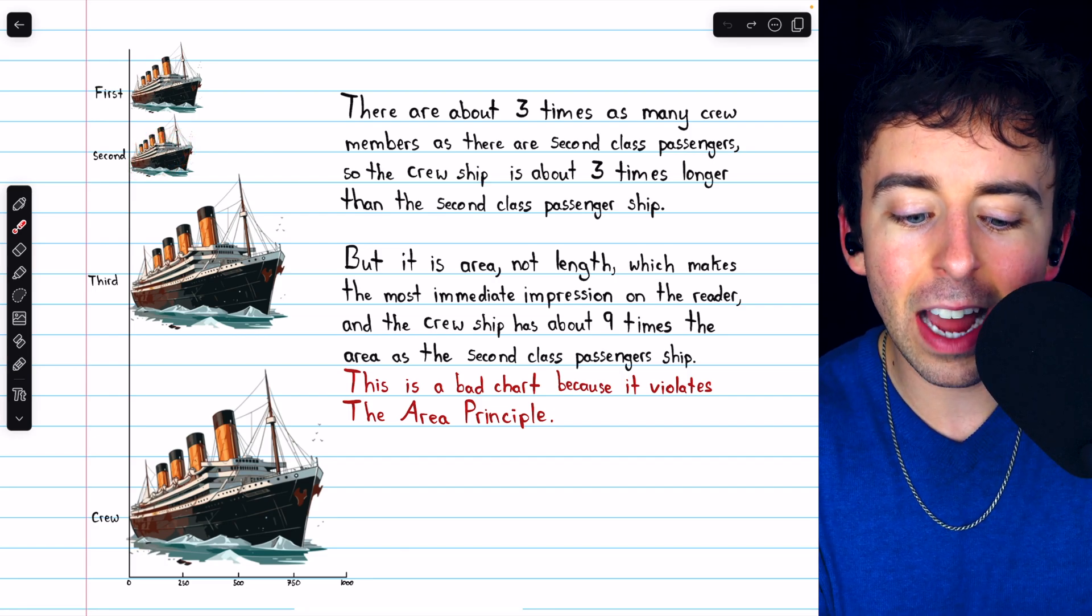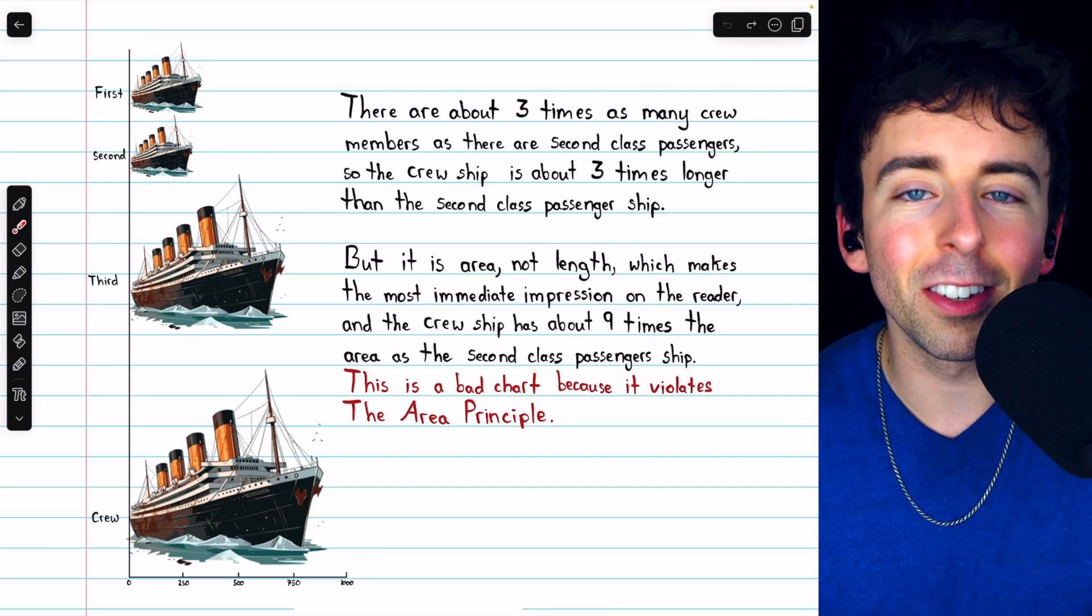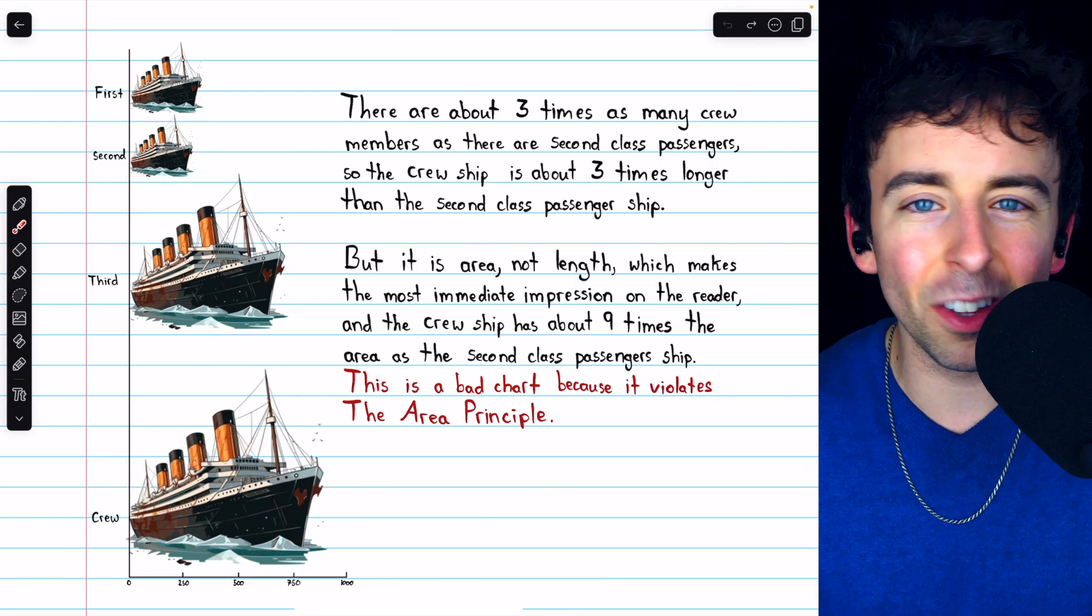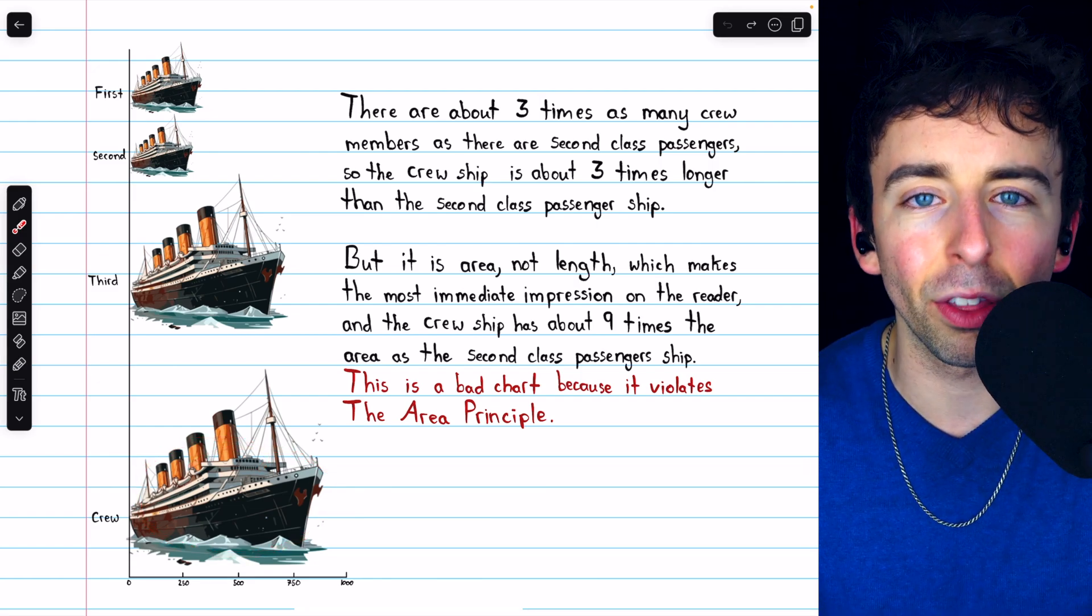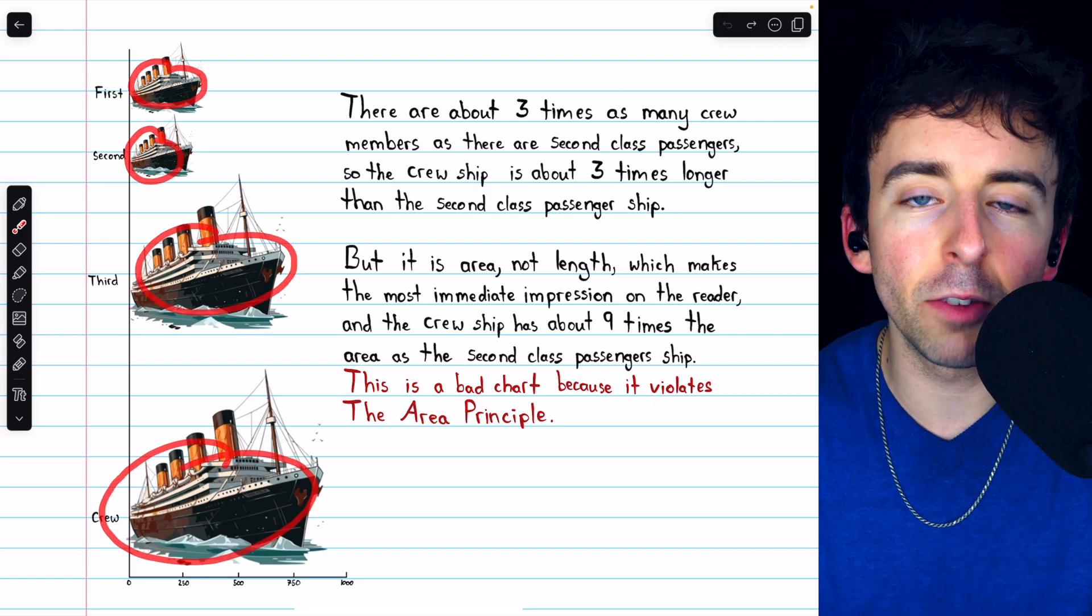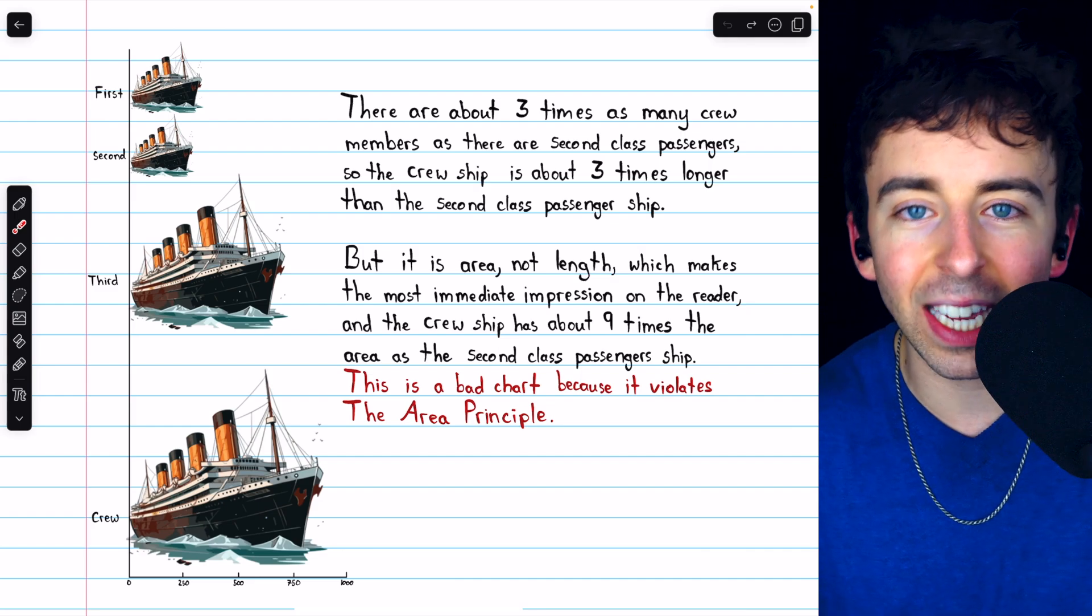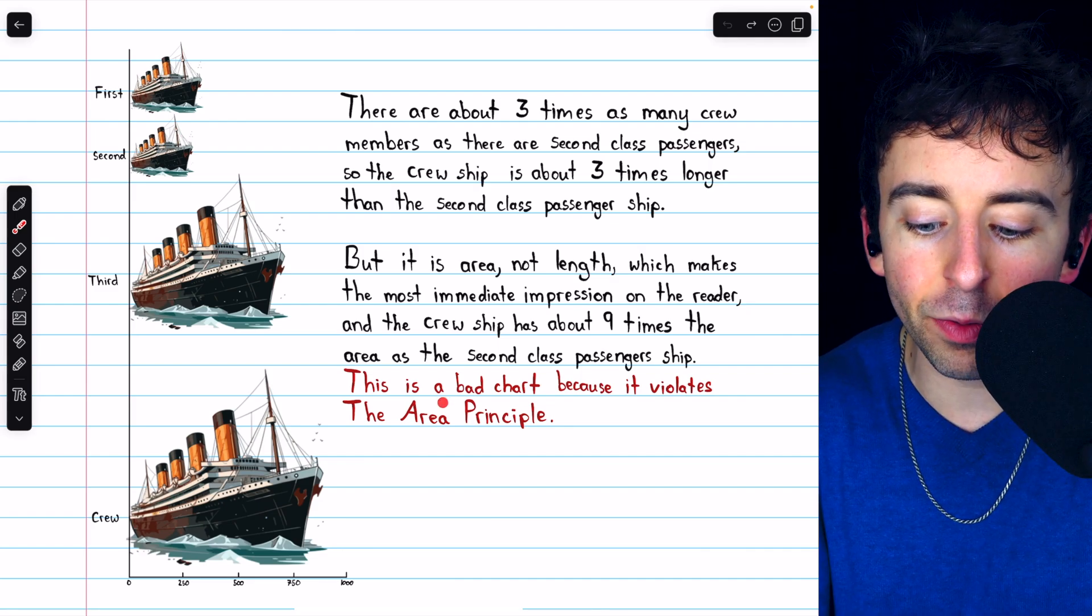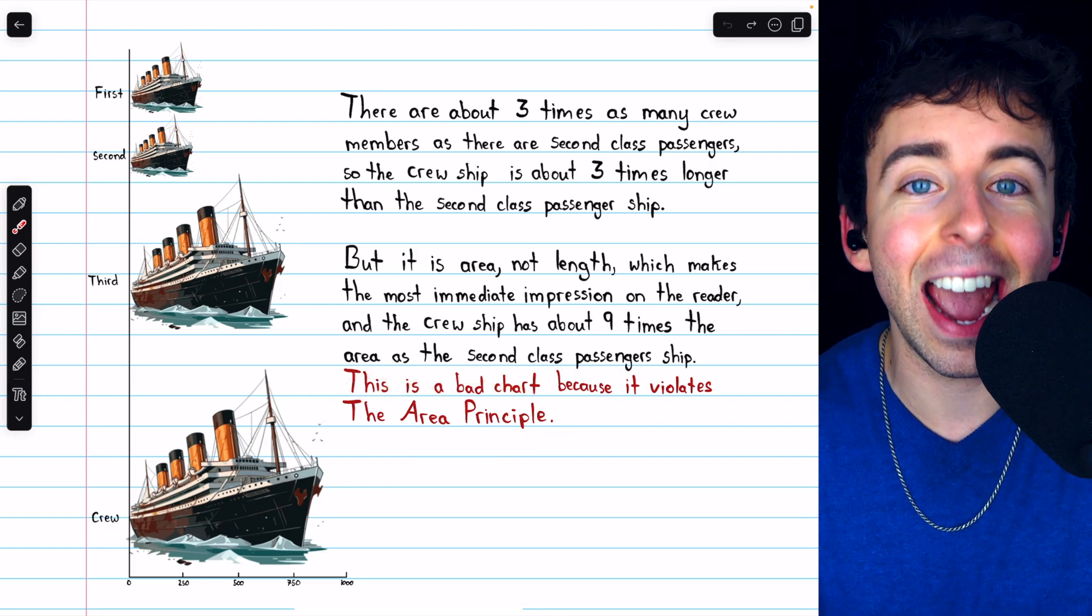This makes it look like the number of second class passengers is completely minuscule compared to the number of crew members, when really the ratio is just about one to three. Since the areas of these pictures are not accurately representing the proportions of the categories they represent, the problem with this chart is that it's violating what's called the area principle.